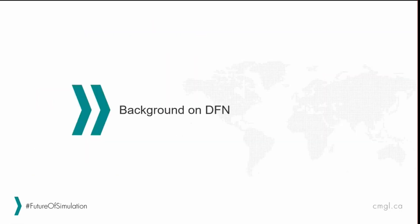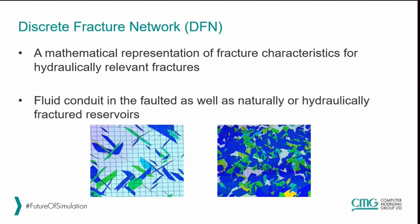So next we'll discuss a little bit on DFN. The DFN is a mathematical representation of fracture characteristics for hydraulically relevant fractures — so anywhere where we have fractures with enough fluid flow, we can model these using DFNs. These model the fracture conduit in faulted as well as naturally or hydraulically fractured reservoirs. In the images we can see multiple planes, and each of these planes might be a different unit in a discrete fracture network.